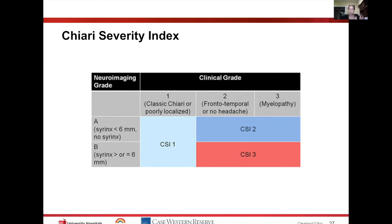These were grouped into three clinical grades: Grade 1 — the classic occipital Chiari headache or generally poorly localized headache; Grade 2 — frontotemporal headache or no headache at all; Grade 3 — patients who predominantly had myelopathy. The neuroimaging grade categorized syrinx as absent or less than 6mm (category A) versus greater than 6mm (category B). The classic Chiari headache, regardless of syrinx size, had the best response to surgery and the biggest improvements in quality of life.